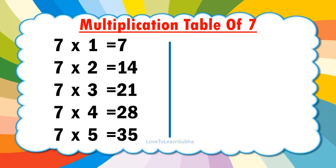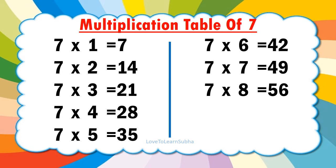7 5's are 35. 7 6's are 42. 7 7's are 49. 7 8's are 56. 7 9's are 63. 7 10's are 70.